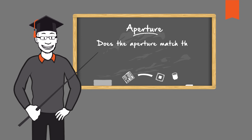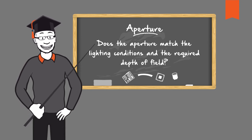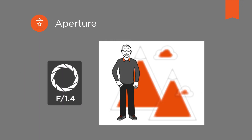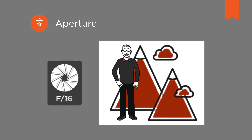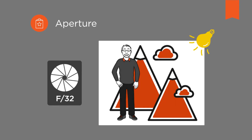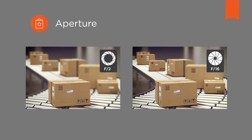Does the aperture match the lighting conditions and the required depth of field? The aperture of a lens will determine how much light will reach the sensor and is given by the F number. The larger this number, the smaller the aperture and the less light comes through the lens. In this case, sufficient lighting is mandatory in the vision system. However, a closed aperture can offer several advantages: the smaller the aperture, the greater the depth of field and the smaller the image errors. For each lens, there is an aperture setting at which the image is optimally sharp, and many data sheets show the optimum sharpness of a lens with the aperture slightly closed.